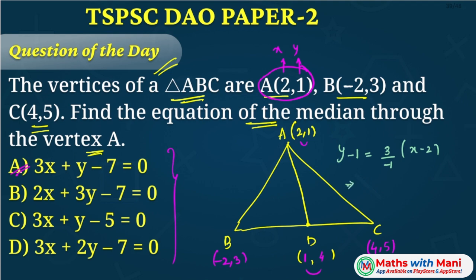So y minus 1 equal to -3(x minus 2), which gives 3x plus y minus 7 equal to 0. It is the equation of the line. So in this way you can find out the median equation.